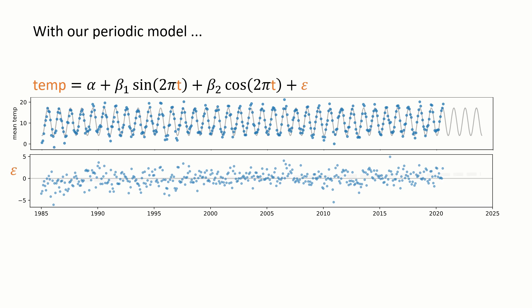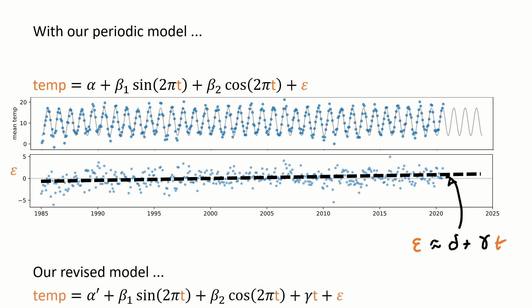So as a first guess, let's investigate a linear trend. Here I've drawn by eye roughly what the trend might be, and I've written down a generic formula for it. Epsilon is roughly delta plus gamma times t. So let's just add this to our model.